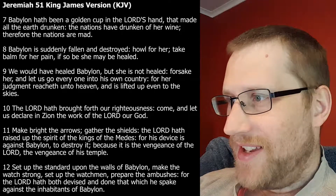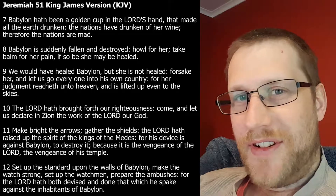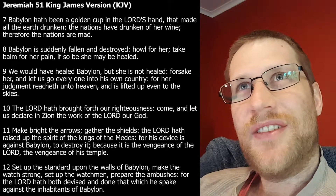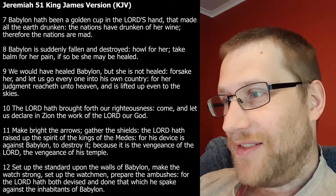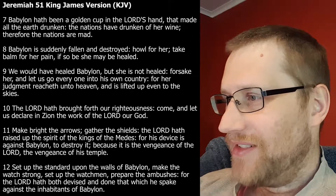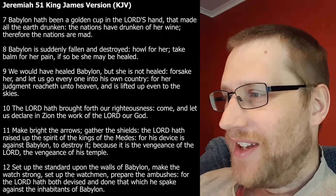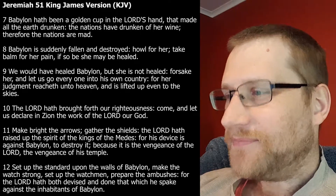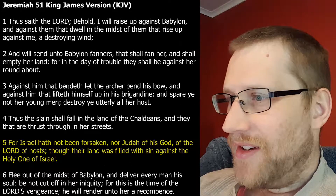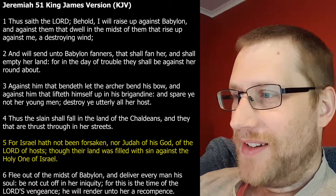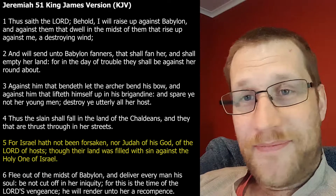These verses are interesting — we've got the land filled with sin, the need to flee out of Babylon, which is also commanded in Revelation. 'Deliver every man his soul, will have vengeance' — Babylon has been a golden cup in the Lord's hand, there's that symbology — the great whore of Babylon has the golden cup, all the nations have drunk of her wine, therefore the nations are mad. Babylon is fallen, is fallen. And howl for her, take balm for her pain. There are all these connections, but then it's also saying Israel hath not been forsaken nor Judah of his God — so it's puzzling to try and figure this out.